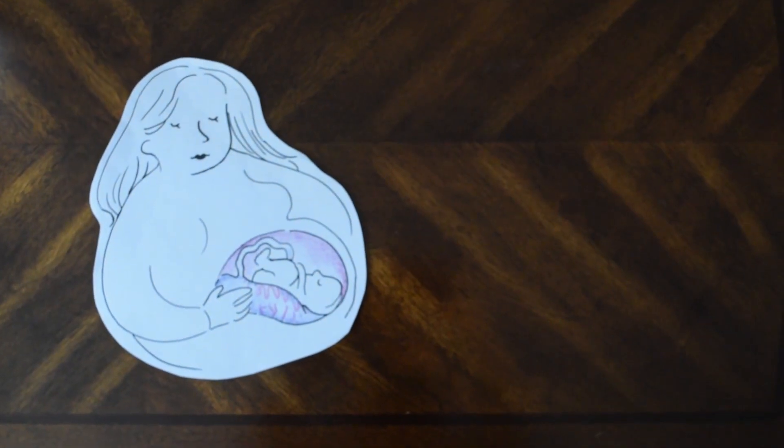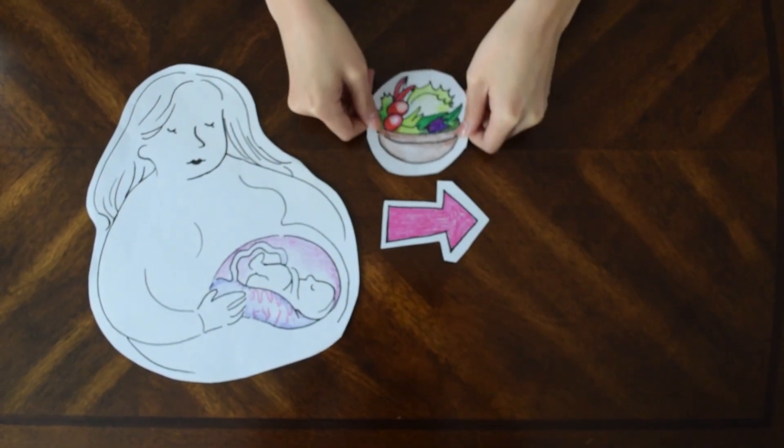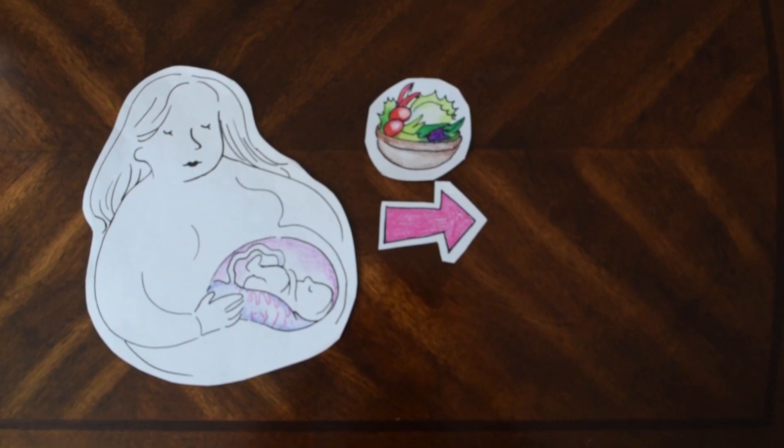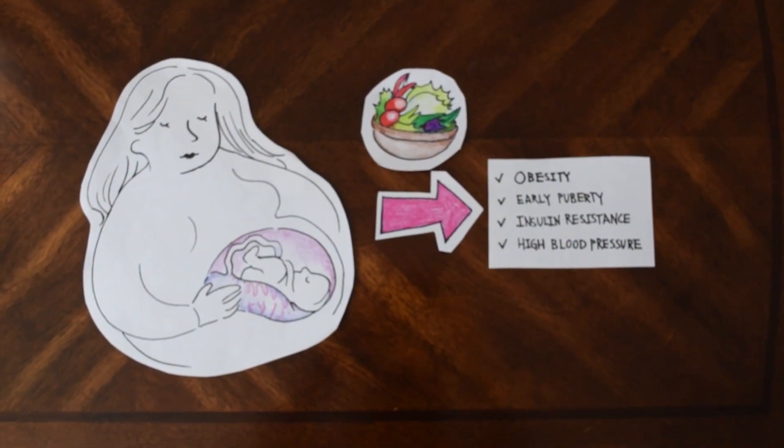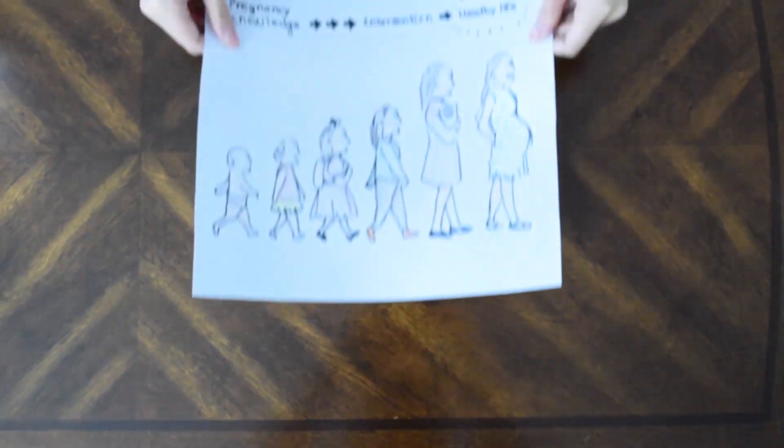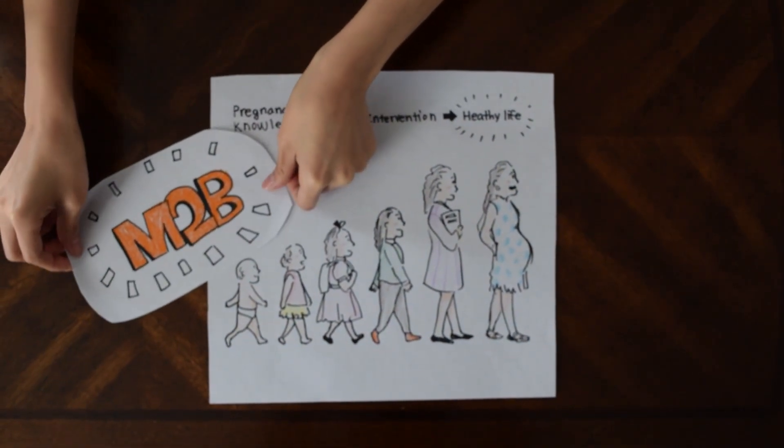In summary, exploring the early life environment can help us better understand how adverse factors during pregnancy, such as an unhealthy diet, can predispose an individual to disease later in life. Ultimately, this knowledge will allow us to implement interventions that will aim to support knowledge translation and behaviour change.